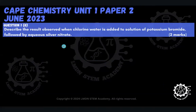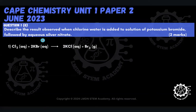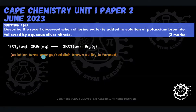Part G says: describe the result observed when chlorine water — aqueous chlorine — is added to a solution of potassium bromide, followed by aqueous silver nitrate. This is a two-step process. In the first step, we add chlorine water to potassium bromide solution. The chlorine is going to displace the bromide ion and take its place beside the potassium, giving us KCl. Because the bromide gets displaced, it becomes diatomic bromine, Br₂. When that happens, we see the solution turn orange or reddish-brown because Br₂ is formed. The bromide ion gets oxidized to Br₂, and we see a reddish-brown colour.